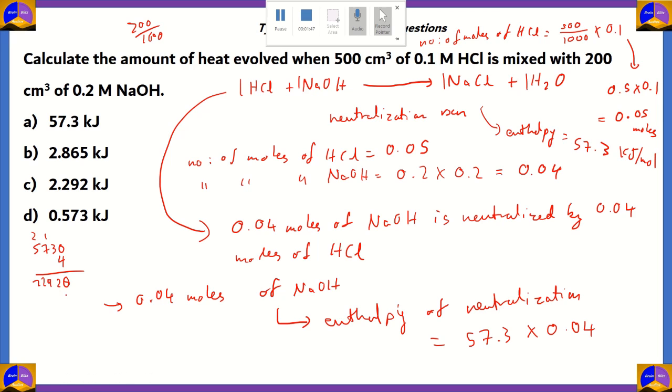And finally, we get 22,920. So, since we replaced two decimal points from both multiples, therefore, the final decimal points that we need to add would be four places to the left. So, one, two, three, and four. So, basically, the enthalpy of neutralization that we get finally, or the amount of heat evolved for this particular reaction with these particular amounts of reagents would be equal to 2.292 kJ.